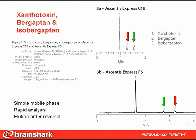We had the same observation with the remaining three compounds: xanthotoxin, bergapten, and isobergapten. Simple mobile phase, very rapid separations on Ascentus Express, and elution order reversal between the C18 and F5 phase chemistries. The F5 column gave longer retention as well as elution order reversal for bergapten and isobergapten.